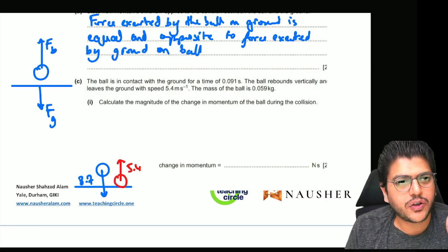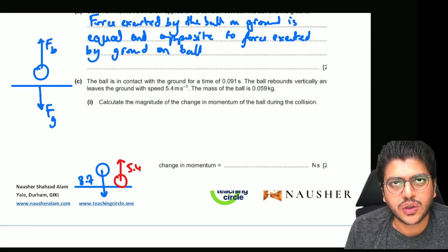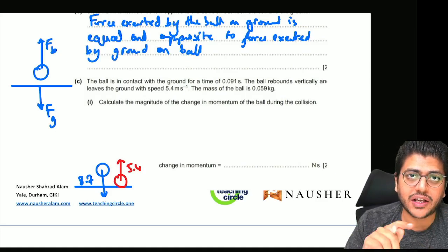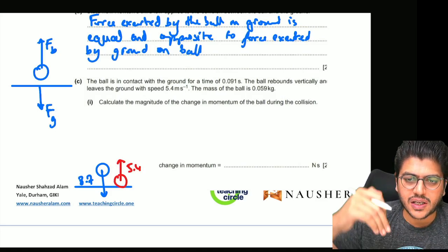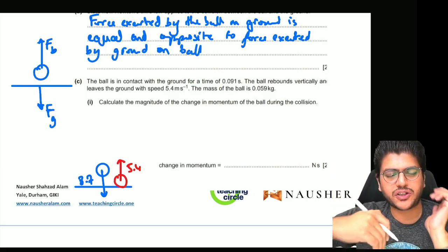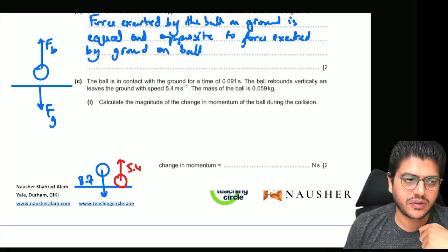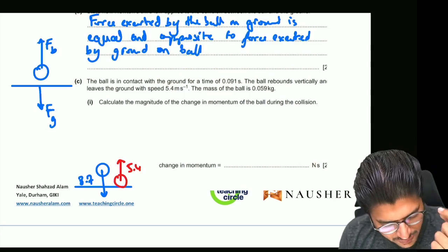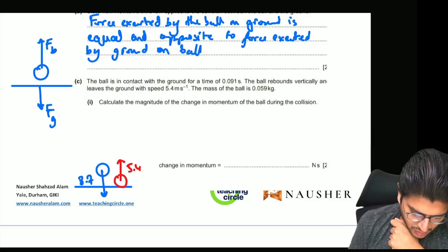I always tell you, velocity is a vector quantity. Whenever you're dealing with any vector quantity, you change the sign if the direction changes. If downward direction is positive, upward direction cannot be positive—it has to be negative. Whenever direction changes, remember this in your exams: you have to change the sign.